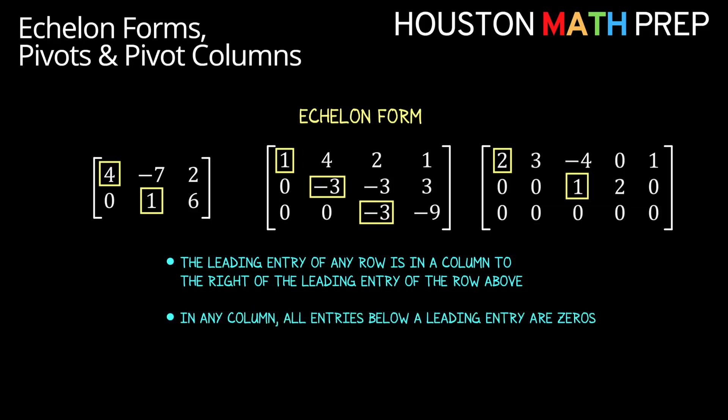The next rule for a matrix to be in echelon form, all entries below a leading entry must be zeros. Here you can see that below my four, I have a zero. This leading entry of one is at the bottom of a matrix, so there's not really anything below it that's required to be zero. You can see a similar pattern in these other matrices where any leading entry has all zeros below it in its column.